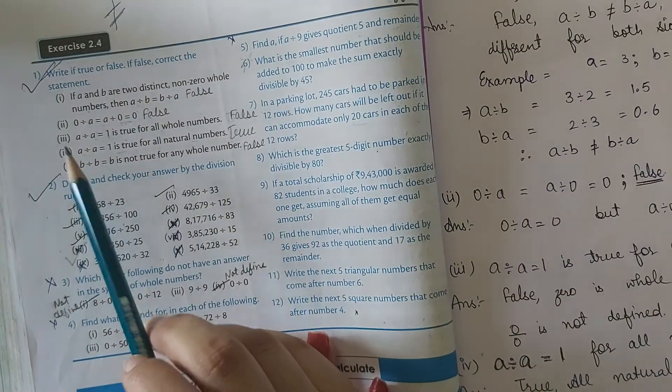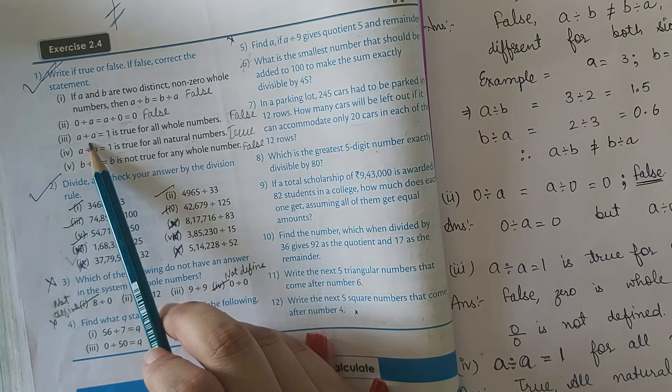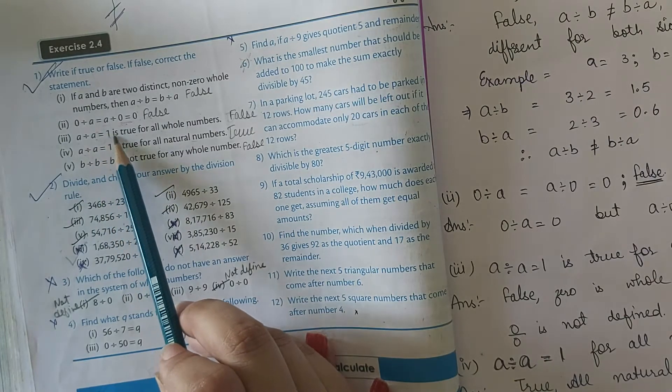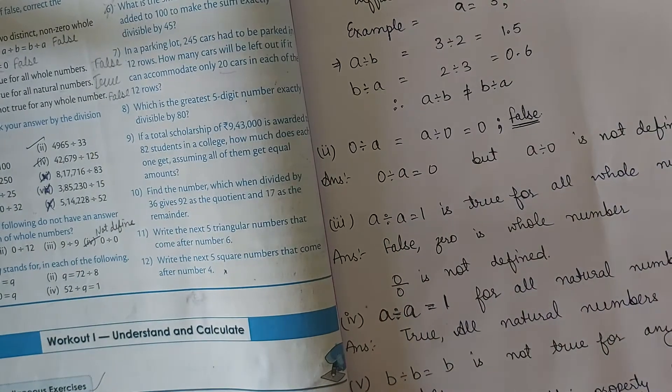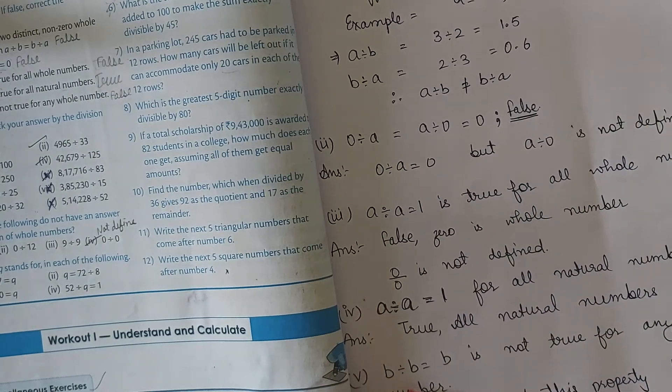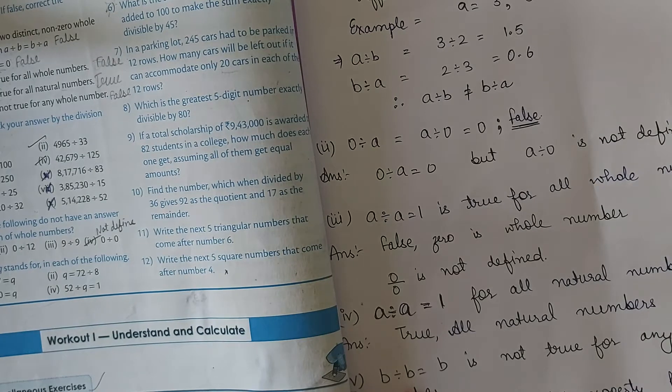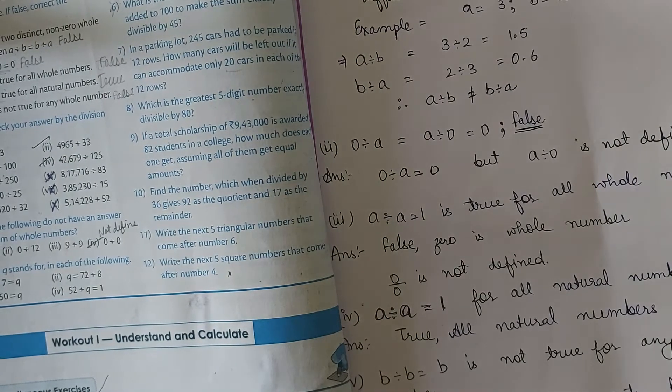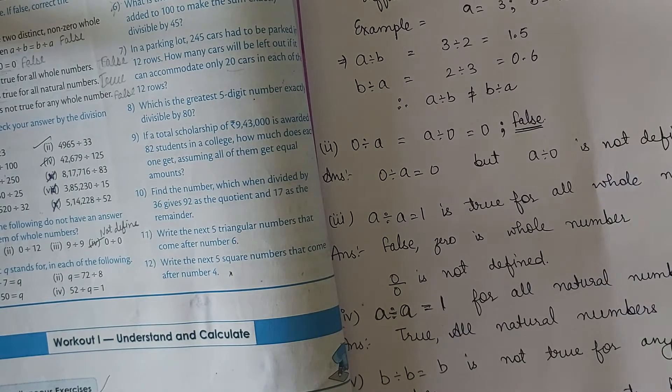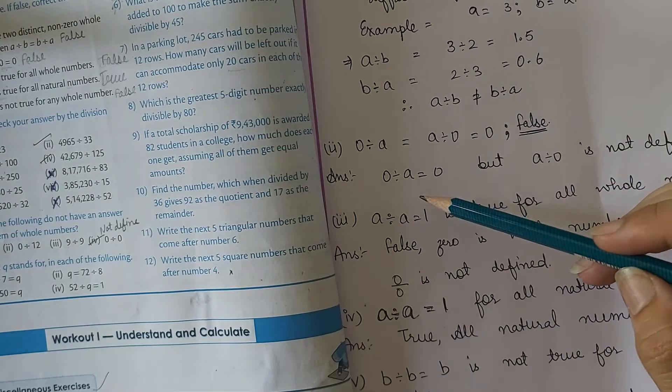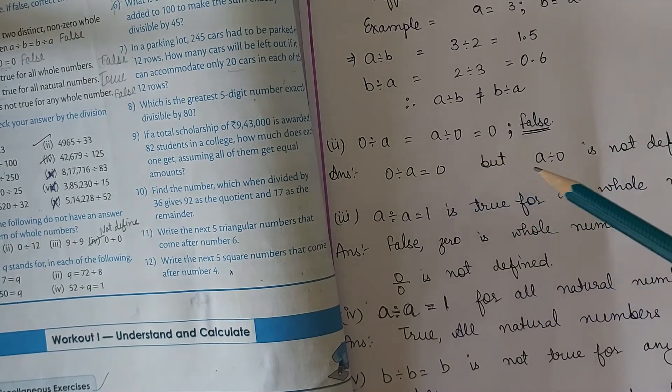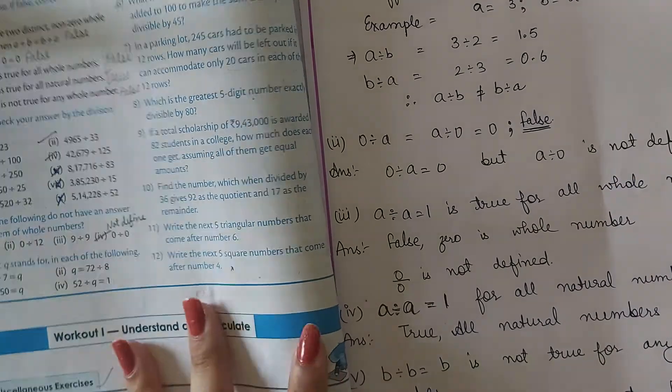Next, A divided by A equals 1 is true for all whole numbers. This is also false. The reason behind this: the whole numbers start from 0. When we divide 0 by 0, it is not defined. So A divided by A is not equals to 1 for all whole numbers.